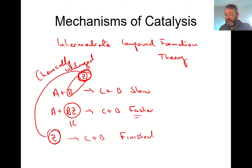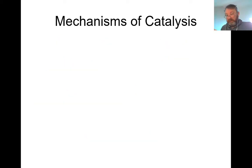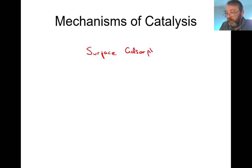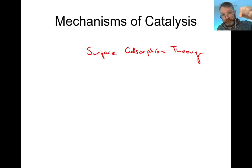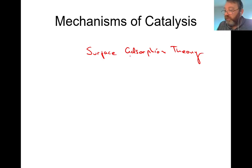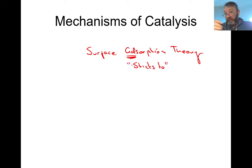The second theory is surface adsorption theory. It's important to understand the difference between adsorption and absorption: if you put a sponge in water it absorbs - takes in. If you put sellotape on a wall it adsorbs - sticks to. For all intents and purposes, adsorption means sticking to. With A and B as particles floating around finding it difficult to react, you introduce solid catalyst Z - so we're dealing with heterogeneous catalysis - and B immediately gathers on the surface of Z, increasing in concentration at that area.